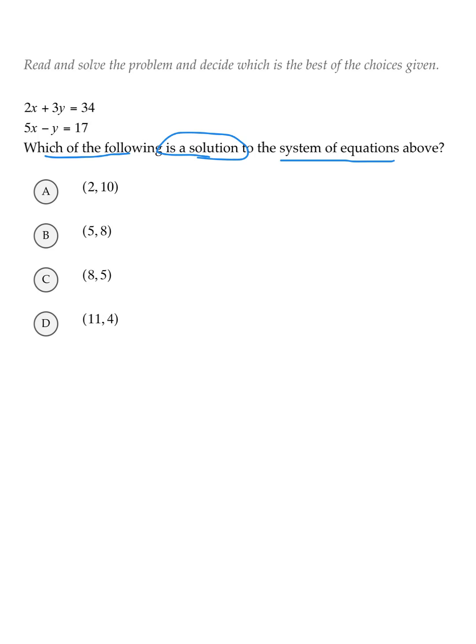In order for an answer to be a solution, it has to work in both equations. These answers happen to be coordinate pairs of x, y. We can take the answer choices, use the x value and the y value from each choice, put them back into the equations above, and see if they actually work.